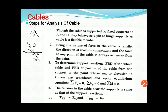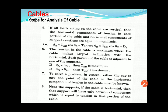Fourth point: the tension in the cable near the support is the same as the support reaction, so T_AB equals the reaction R_A, and T_CD equals the reaction at D. Fifth: if all loads acting on the cable are vertical, then the horizontal components of tension in each portion are equal in magnitude. That is, A_x = T_AB·cos(θ_A) = T_BC·cos(θ_B) = T_CD·cos(θ_C) = D_x.